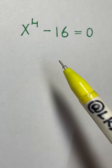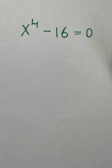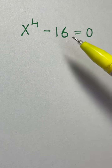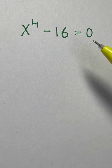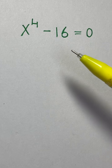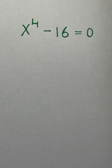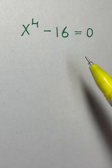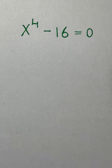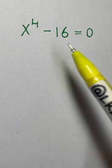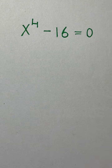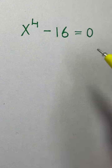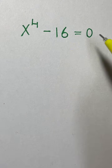Hi everyone, in this live session we're going to solve the equation x to the power of 4 minus 16 equals 0. This is a very easy equation. You might have already recognized the answer, but have you recognized all four roots? Because the exponent says it has four solutions, so let's see if we can find all four roots.